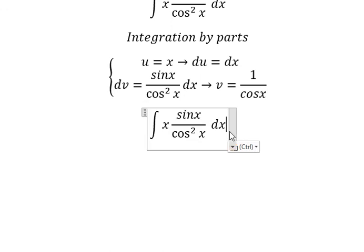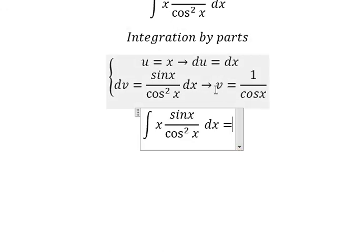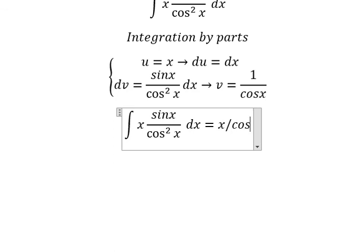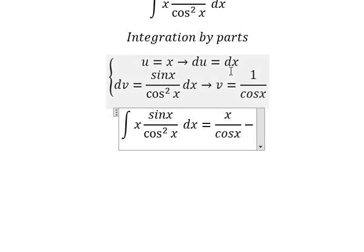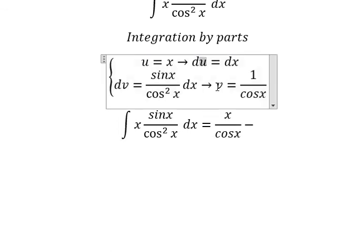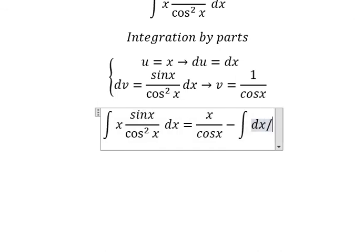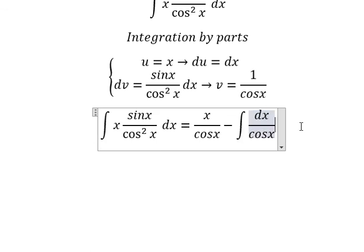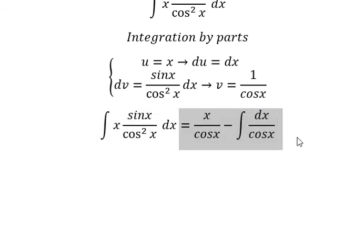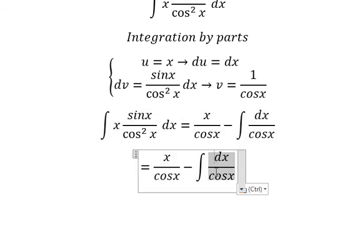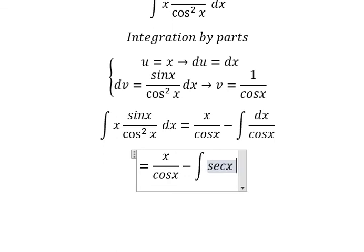Now we have u multiplied by v minus du multiplied by v. So we have the integration dx over cosine x. This one we can change into secant of x dx.